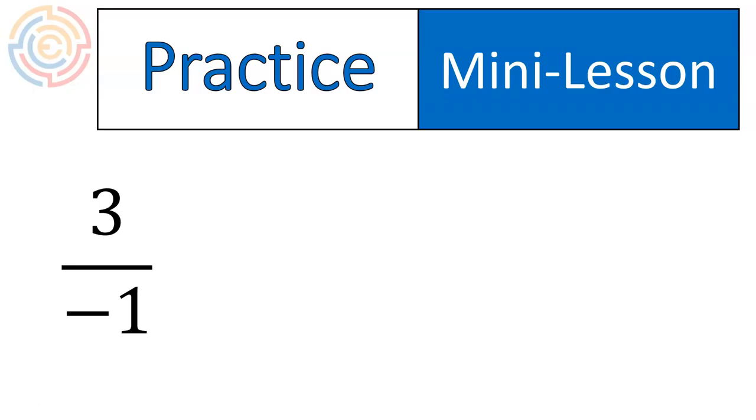3 divided by negative 1. This should be pretty quick at this point. All right, positive divided by negative gives us a negative. How about 6 divided by 2? That should also give us a positive, right? Positive divided by positive gives us a positive. The signs are the same. You end up with a positive answer.